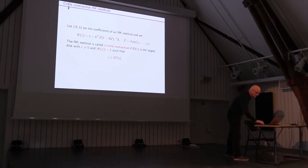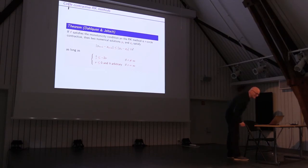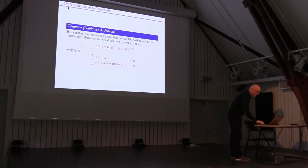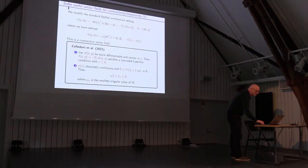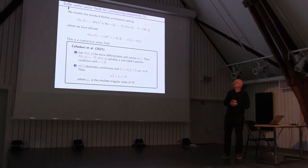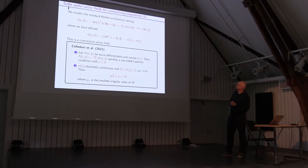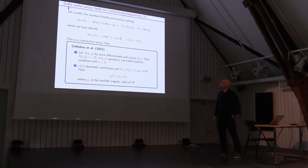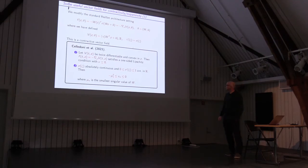What could perhaps be more interesting is how do you choose F in order to obtain a contractive vector field? One easy way to do this is to take minus W-transpose times sigma of W z plus b. This turns out to be a gradient system, and if you define the gradient in a certain way, you can prove that you will get contractive behavior for this system. If you solve the ODE exactly you get something, and if you want to use a numerical method you have to be careful about how you choose it.